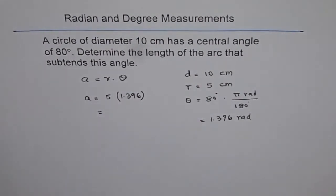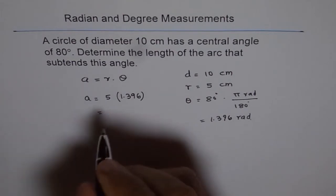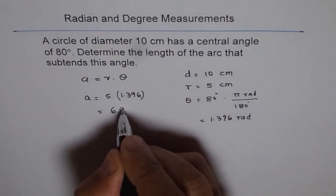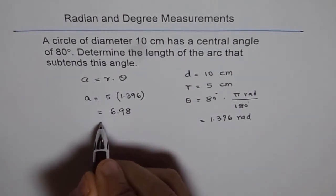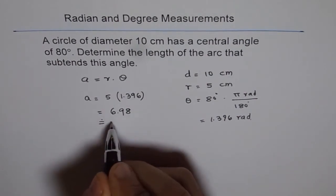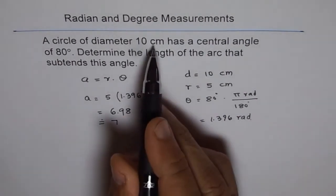So I multiply by 5 and round my answer to the whole number. It is 6.98, which I will round to 7. The units will be centimeters.